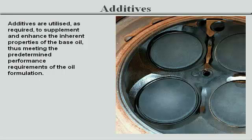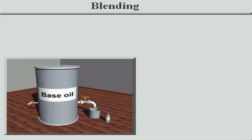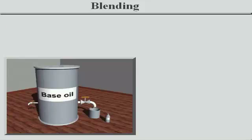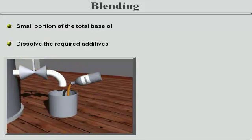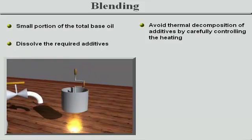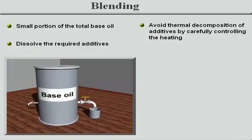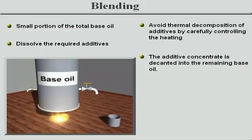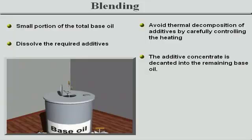Additives are utilised as required to supplement and enhance the inherent properties of the base oil, thus meeting the predetermined performance requirements of the oil formulation. The required additives are initially dissolved in a small portion of the total base oil volume by means of mechanical, jet, or air blending at a convenient temperature. Heating is carefully controlled to avoid thermal decomposition of certain components, such as EP and thiophosphate anti-wear additives. This additive concentrate is then decanted into a large tank and blended with the remaining quantity of base oil.